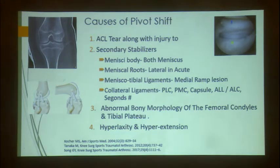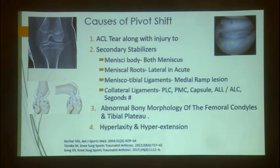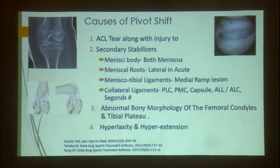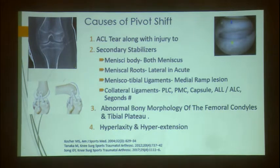Meniscotibial ligaments — especially the ramp lesion, as demonstrated by Dr. Deen Shah — must be addressed; failing to do so will lead to ACL failure. Collaterals, especially the anterolateral capsule, ALL capsule, and Segond's fracture, contribute to rotational instability. Abnormal bony morphology, particularly tibial slope, also plays a role. Even an abnormal slope can contribute to instability, especially in revision cases, along with hyperlaxity and hyperextension.